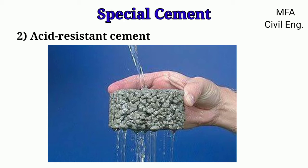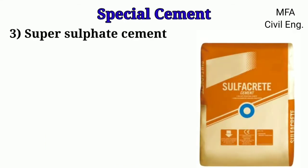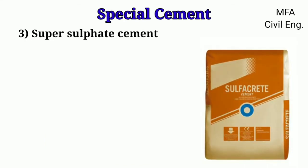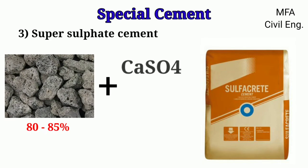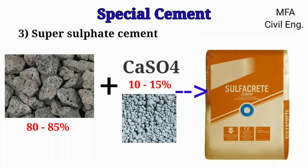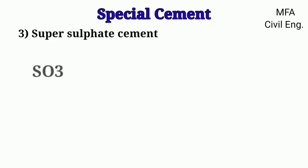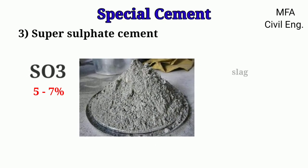Super sulfate cement is produced by grinding together granulated blast furnace slag — about 80 to 85 percent — and calcium sulfate — about 10 to 15 percent — with Portland cement clinker — about 1 to 2 percent. The content of sulfur trioxide is 5 to 7 percent in the mixture where the blast furnace slag is about 85 percent.